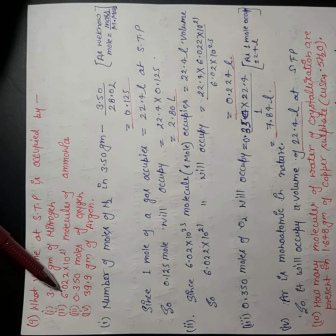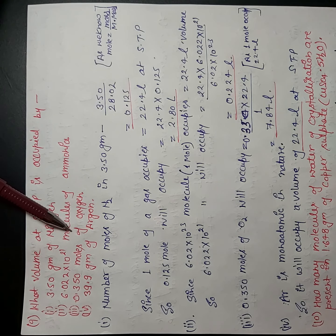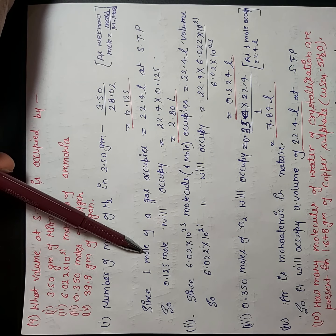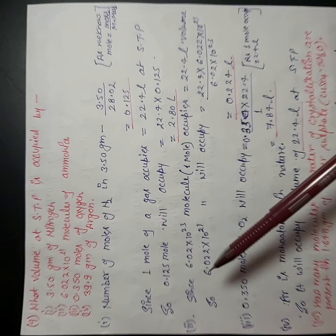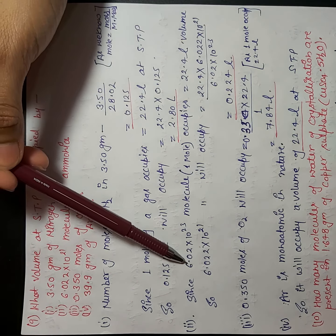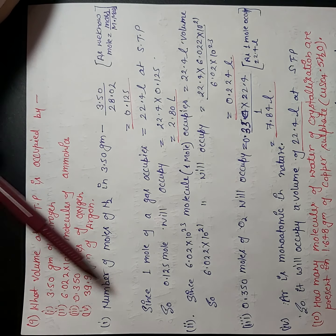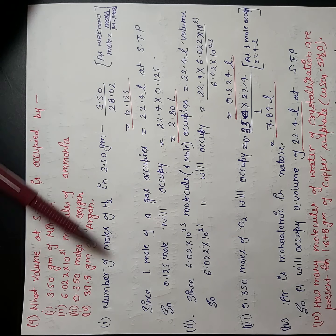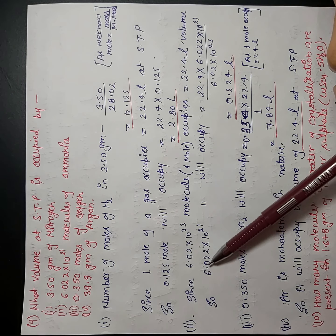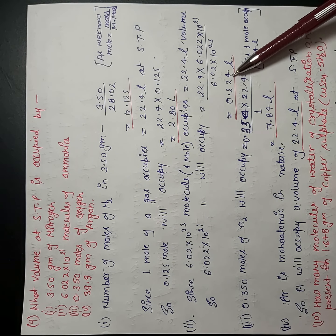Our next part is 6.022 × 10²¹ molecules of ammonia. As we know, 1 mole of gas occupies 22.4 liters, and 1 mole means 6.022 × 10²³ molecules — Avogadro's number. Since 6.022 × 10²³ molecules occupy 22.4 liters, then 6.022 × 10²¹ molecules will occupy 22.4 × 6.022 × 10²¹ divided by Avogadro's number, which equals 0.224 liters.